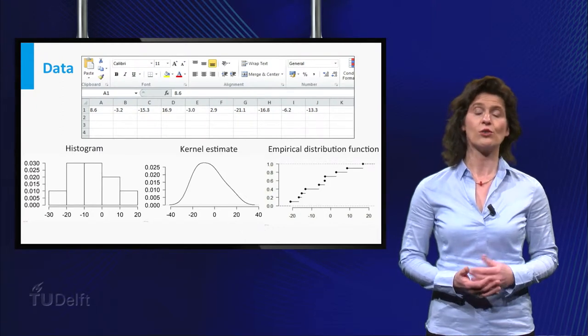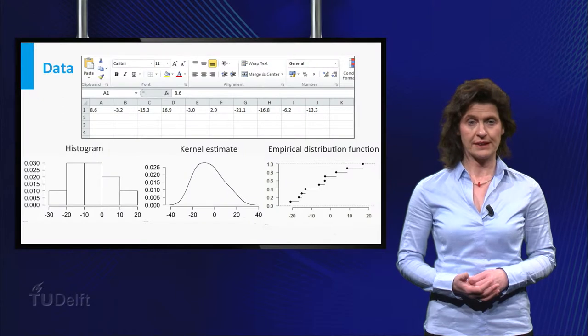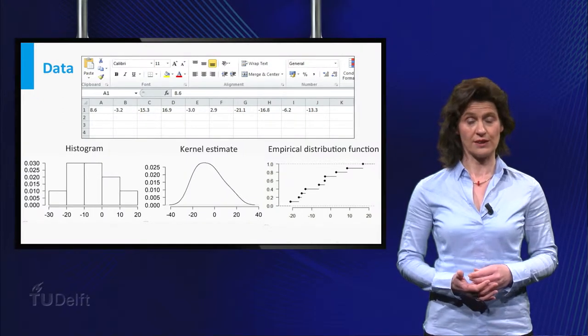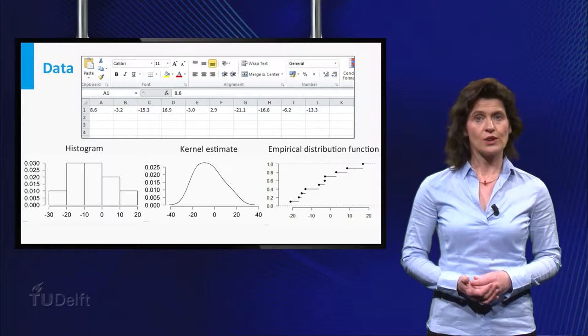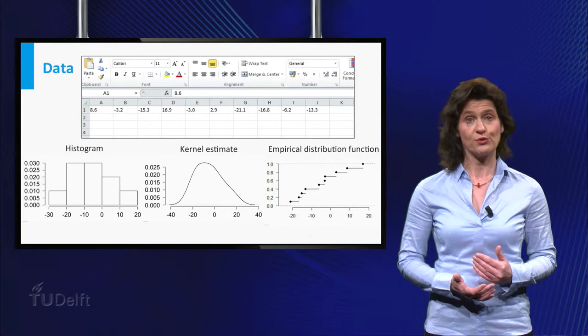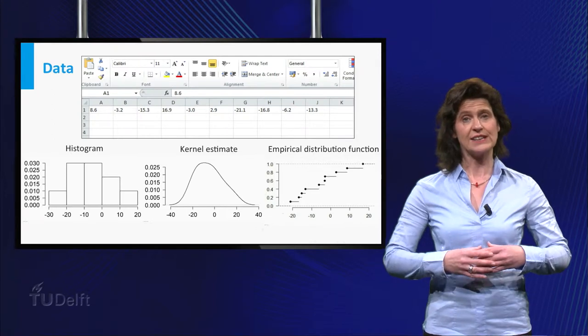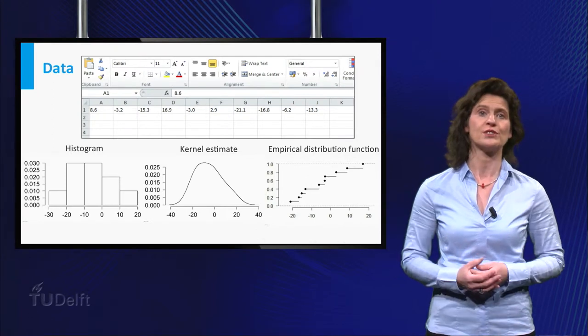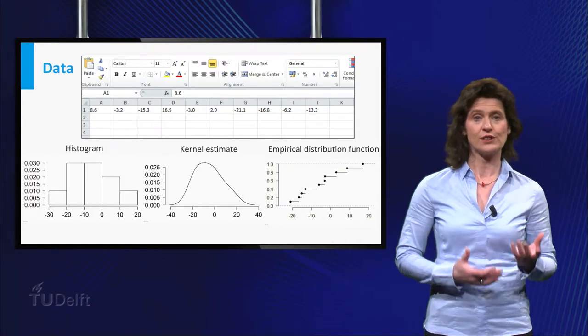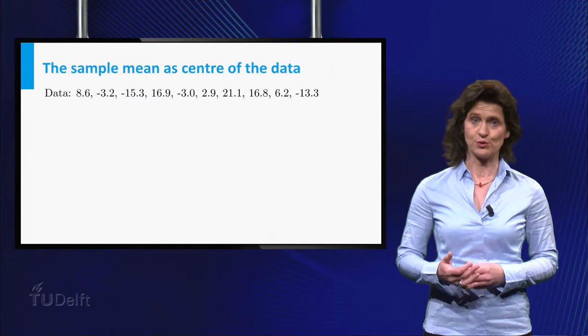We focus on one-dimensional or univariate data. In the graphs given here we visualize a set of 10 values. You can also give a numerical indication of the location of the bulk of the data, as well as an indication of the spread of the individual points around the center. Various choices can be made for these center and spread measures, as we will see.